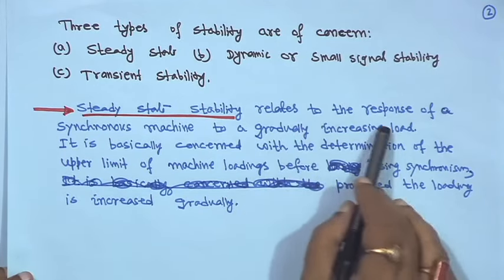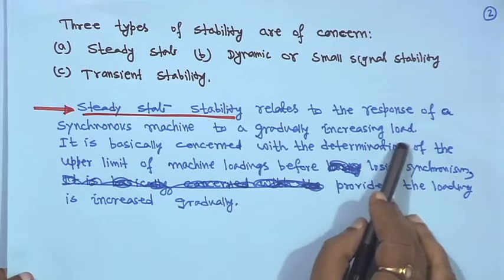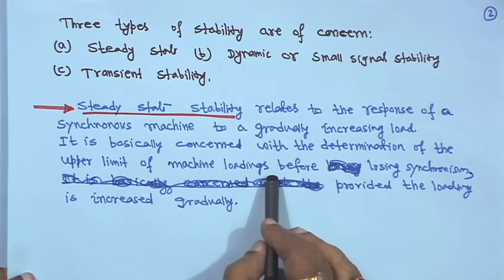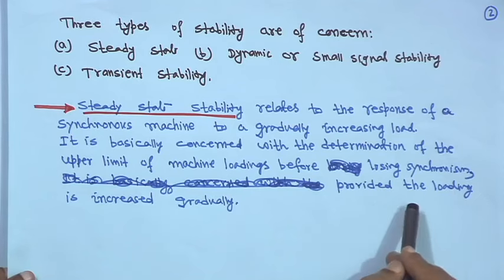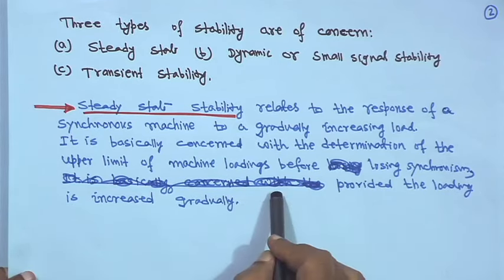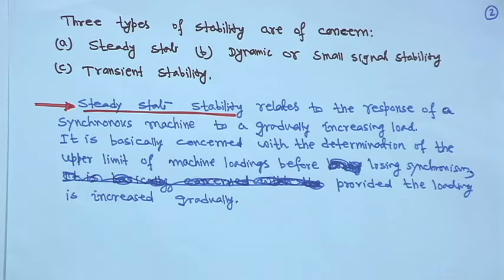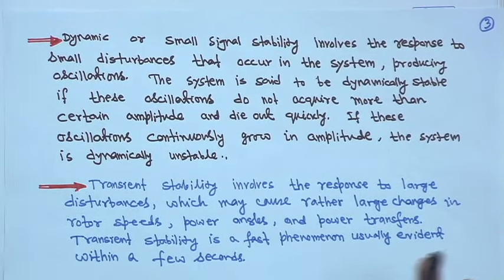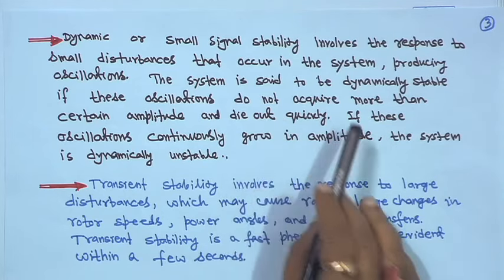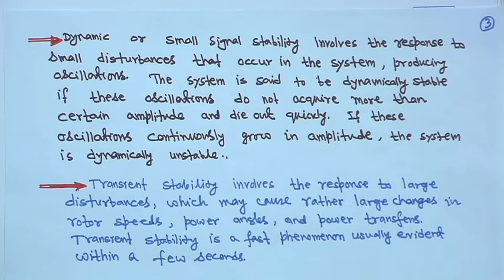Steady state stability is basically concerned with the determination of the upper limit of machine loadings before losing synchronism, provided the loading is increased gradually. The loading will be sustained up to a maximum limit, after which it may fall out of step and lose synchronism. Dynamic or small signal stability involves the response to small disturbances that occur in the system, producing oscillations. The system is said to be dynamically stable if these oscillations do not acquire more than a certain amplitude and die out quickly, but if the oscillations continuously grow in amplitude the system is dynamically unstable.